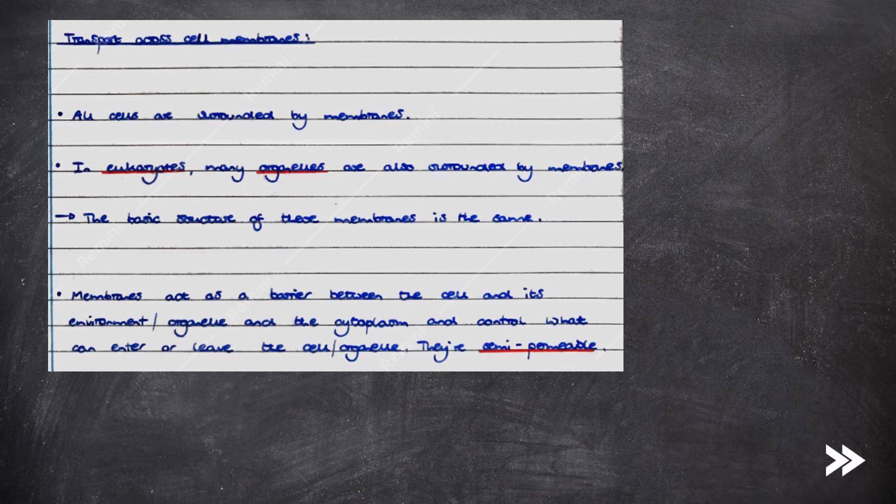So let's make a start. All cells are surrounded by membranes. In eukaryotes, many organelles are also surrounded by membranes. The basic structure of these membranes is the same. Membranes act as a barrier between the cell and its environment or the organelle and the cytoplasm in eukaryotic cells and control what can enter or leave the cell or organelle. They're semi-permeable.